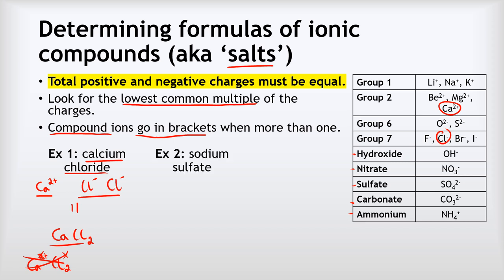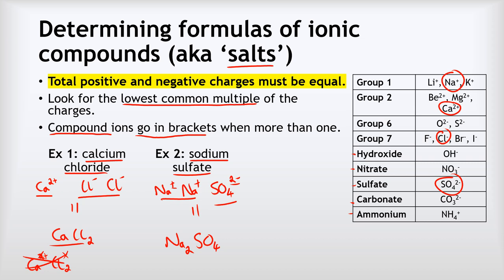Example 2 is sodium sulfate. The cation is sodium, Na⁺, and the anion is sulfate, SO₄²⁻. I've got two negative charges but only one positive, so I need another sodium. Now I've got two pluses to cancel out my two negatives. I write Na₂ for two sodiums and SO₄ for one sulfate — and again, I'm not putting the charges in my final formula.